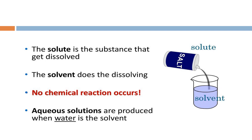The solvent is the component present in the largest proportion in the solution. The solute is the substance present in a lesser proportion than the solvent. When solute and solvent combine together, no chemical reaction takes place.